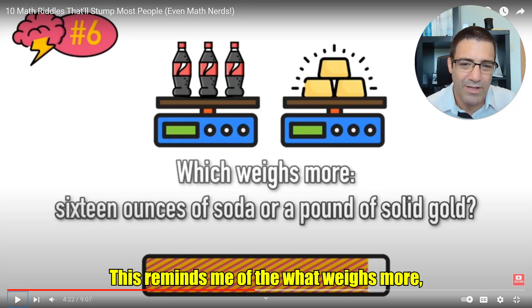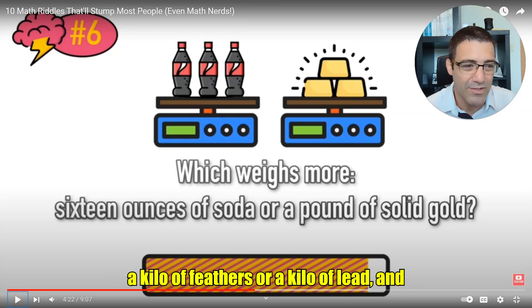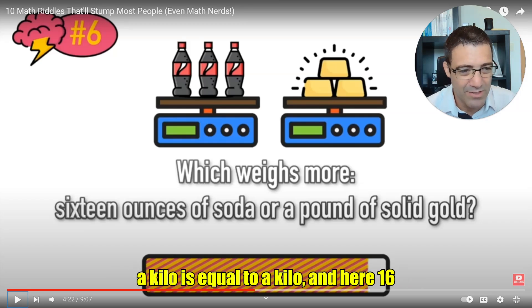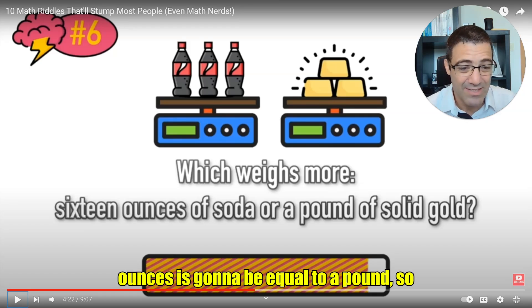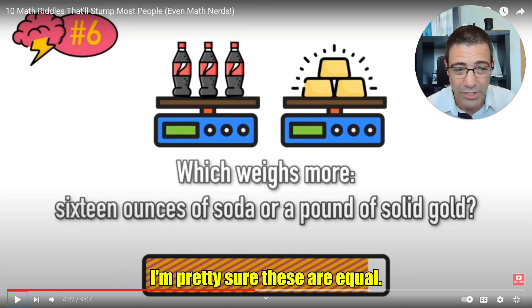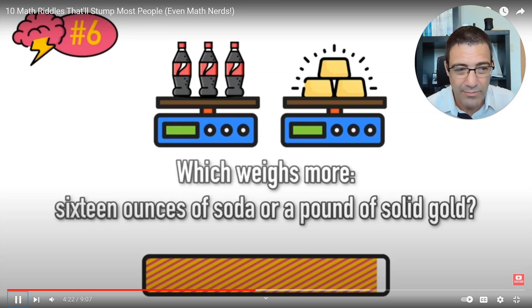This reminds me of the what weighs more, kilo of feathers or kilo of lead. And a kilo is equal to a kilo. And here 16 ounces is going to be equal to a pound, so I'm pretty sure these are equal.